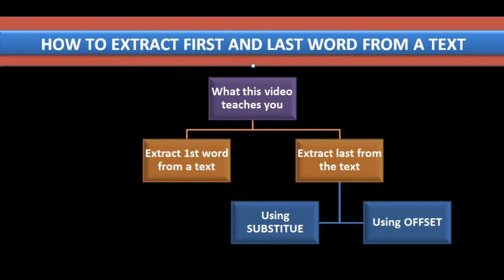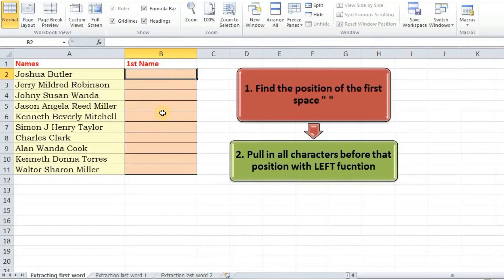But let's say we want to extract merely the first or the last word from a text. In that case we won't use text to column. So we will do it by some other way.